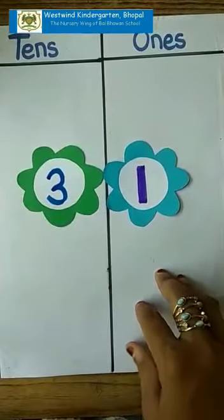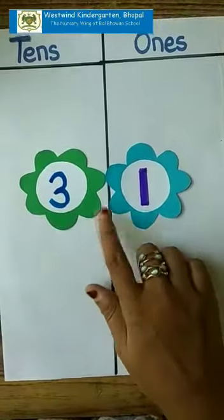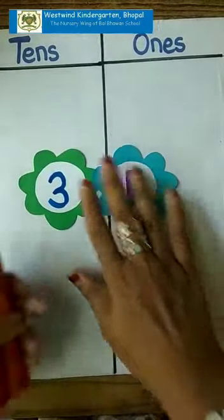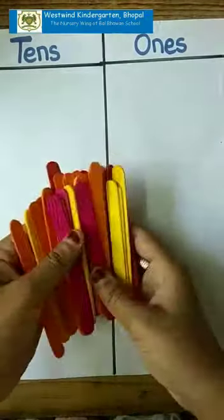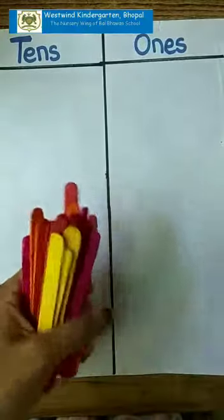Children, let's recapitulate the concept of tens and ones and let's see how number 31 is formed. Now, alright, so as you can see, I have so many ice cream sticks in my hand.